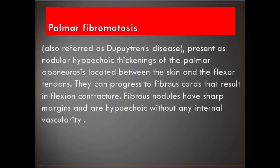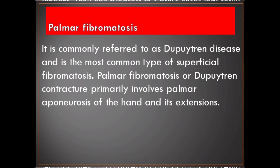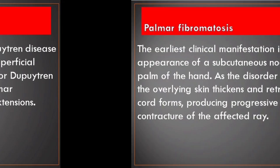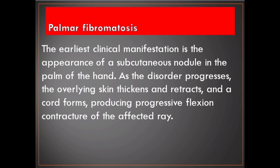Palmar fibromatosis, also referred to as Dupuytren's disease, presents as nodular hypoechoic thickenings of the palmar aponeurosis located between the skin and the flexor tendons. They can progress to fibrous cords that result in flexion contracture. Fibrous nodules have sharp margins and are hypoechoic without any internal vascularity. Dupuytren's disease is the most common type of superficial fibromatosis, primarily involving the palmar aponeurosis of the hand and its extensions. The earliest clinical manifestation is the appearance of a subcutaneous nodule in the palm of the hand, and as the disorder progresses, the overlying skin thickens and retracts, and a cord forms, producing progressive flexion contracture of the affected ray.